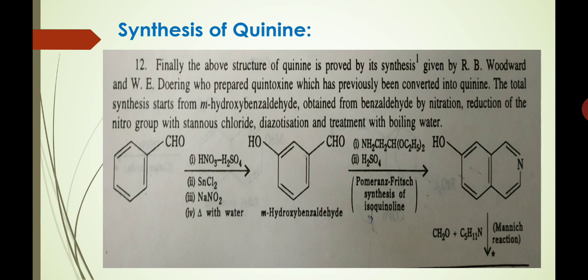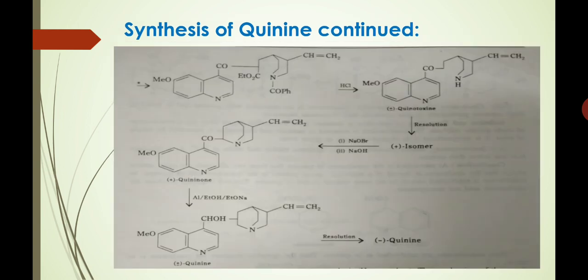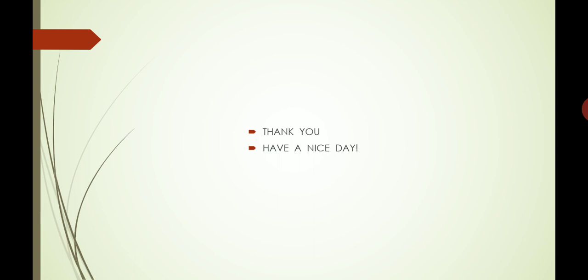Here, we have taken the synthesis of quinine given by Woodward and Döring, who prepared quinotoxine, which was previously converted to quinine. The total synthesis starts from m-nitrobenzaldehyde, obtained from benzaldehyde by nitration, reduction of the nitro group with stannous chloride, diazotization, and treatment with boiling water, as we can see in this series of reactions. And finally, we get quinine. This was all about the constitution or the structure of quinine. Thank you. Have a nice day.